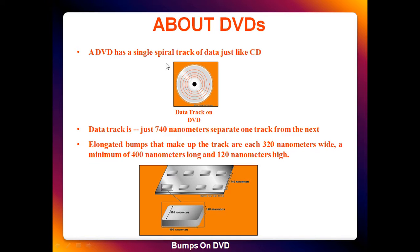A DVD has a single spiral track of data just like a CD. The data track separation is just 740 nanometers — a huge gain compared to CD. The elongated bumps that make up the track are around 320 nanometers wide, a minimum of 400 nanometers long, and 120 nanometers in height. So the measurements came down to nanometers in DVD, which is a huge gain.